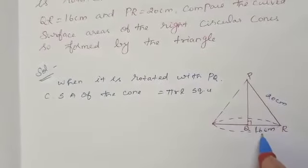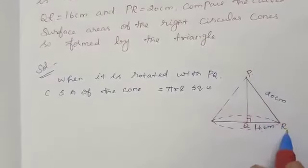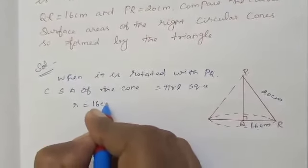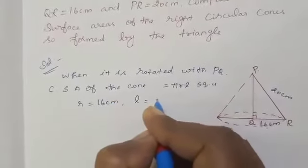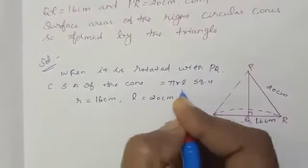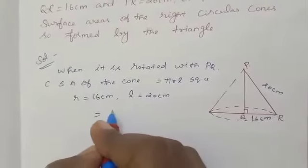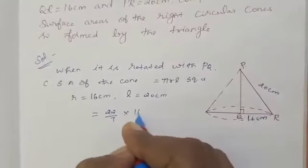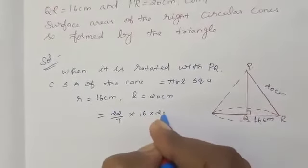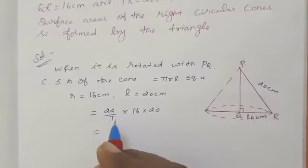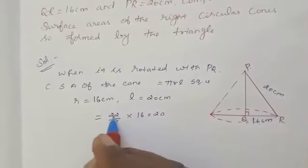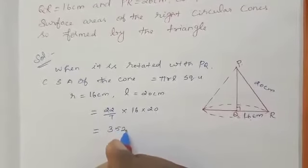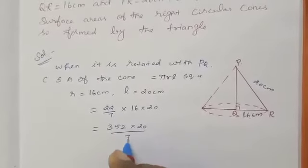Here, R is 16, L is 20 cm. We can substitute in the CSA formula 22 by 7 pi value, R value 16 into 20. 16 into 22 we can multiply means we can get 352 into 20 divided by 7.